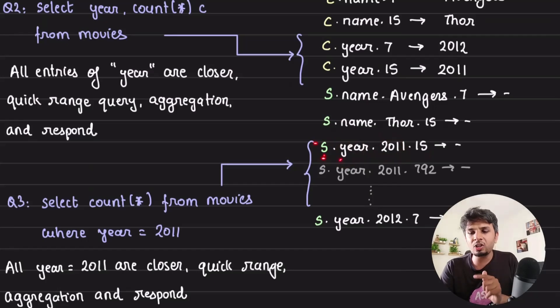If you look carefully, all S.year.2011 will be stored one after another on the disk because my keys are stored in an orderly fashion. So all the keys with S.attribute.value will be placed together, and then I just need to count the number of entries in the range lookup. Such a fascinating concept.